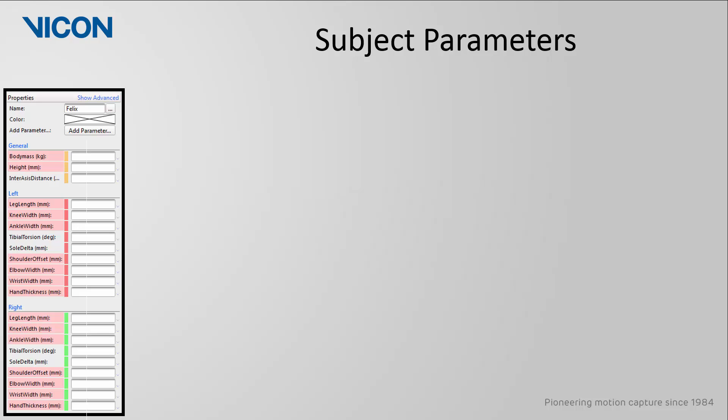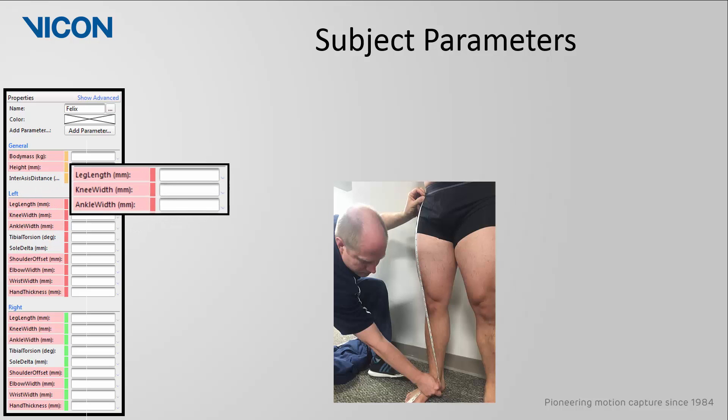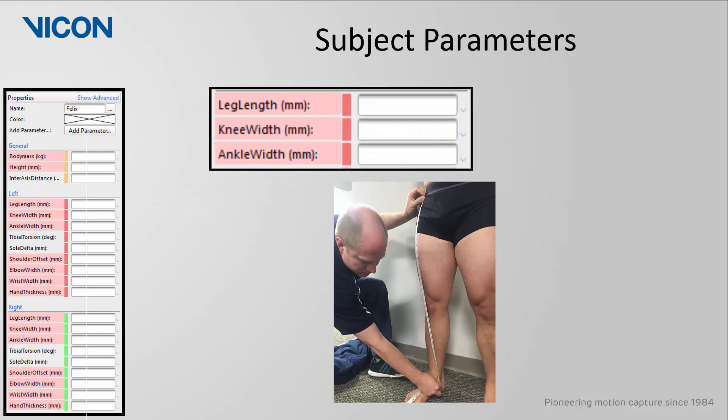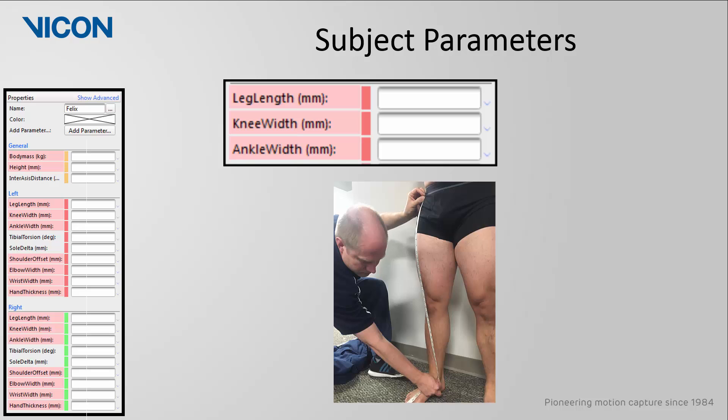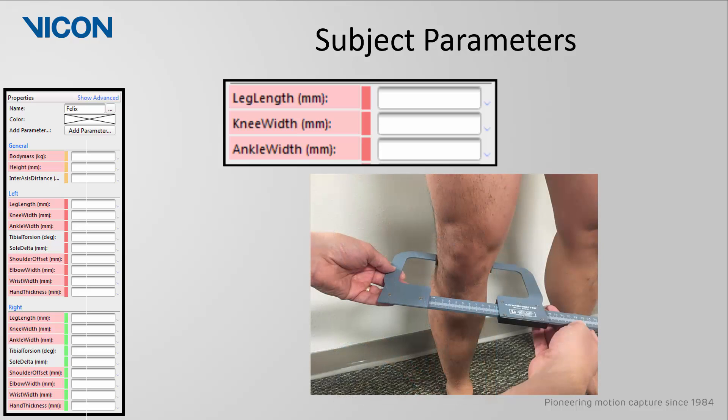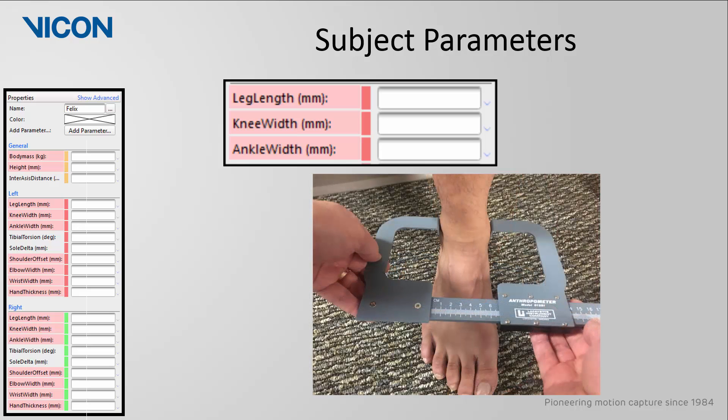Next, we see that we have the left and the right sides sectioned apart. The definition for each measurement are the same for each side. The first three relate to the lower body. For leg length, use a soft tape measure and measure the distance between the ASIS marker and the medial malleolus. For the knee and ankle widths, use calipers to measure the medial lateral distance across the joint's flexion extension axis. If possible, measure these both with the subject standing.